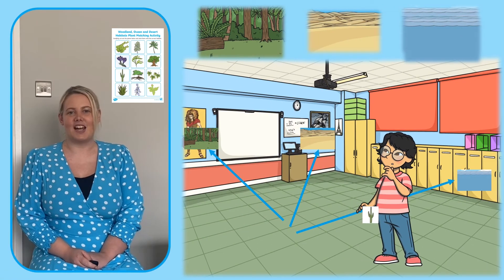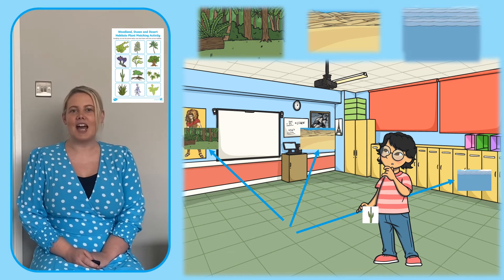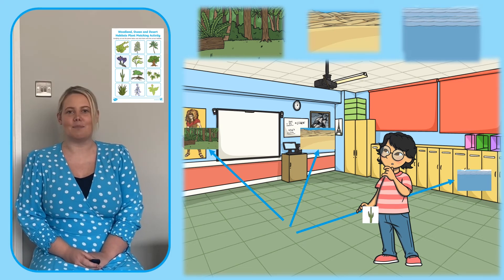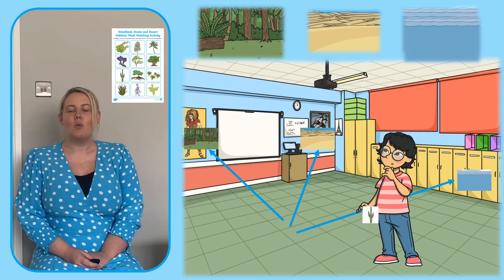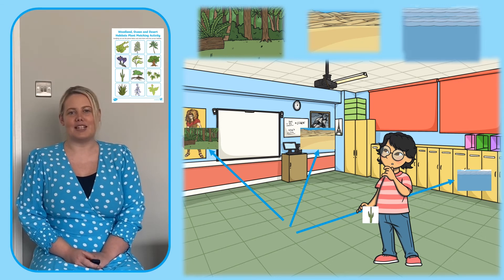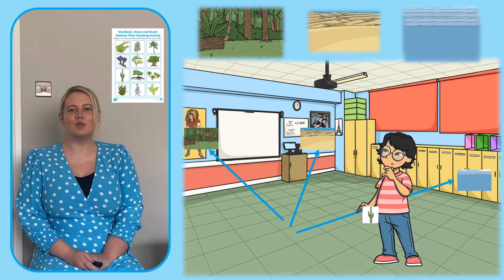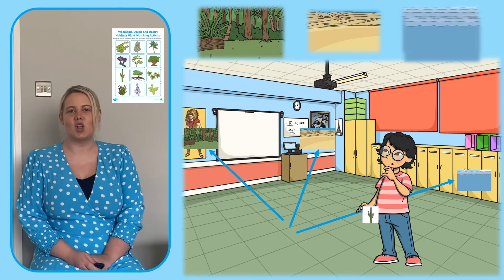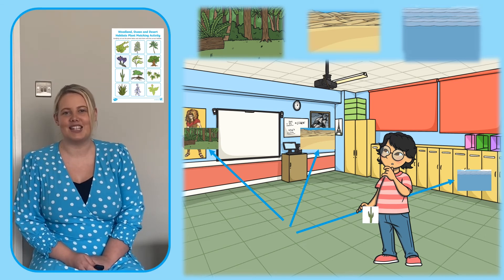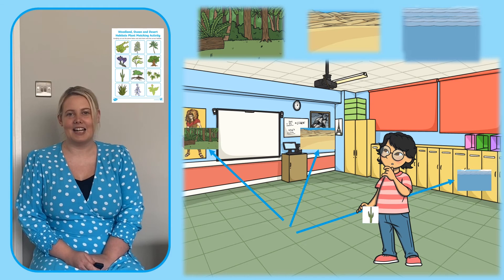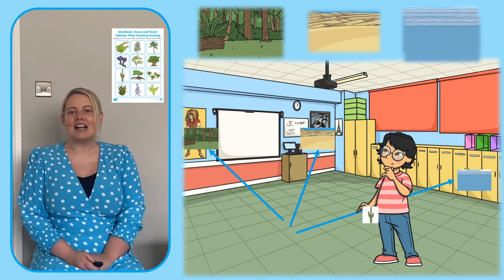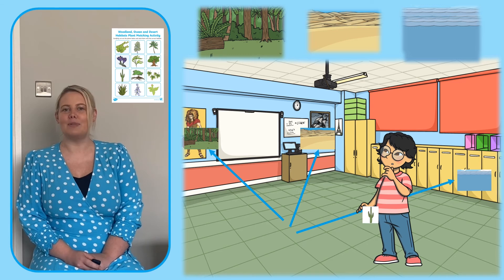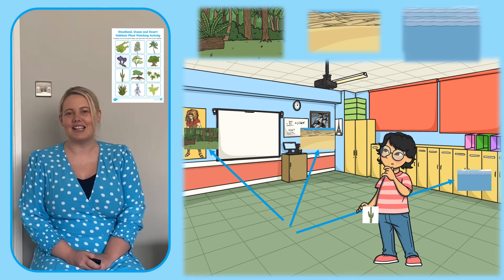This plant matching activity gets learners thinking about the types of habitats that different plants might like to live in. Why not laminate them to make a great display? Learners could move around the room to stick the plants onto the correct habitat using sticky tack. Afterwards, ask learners to write a list of how each habitat is suited to the plants that live there.